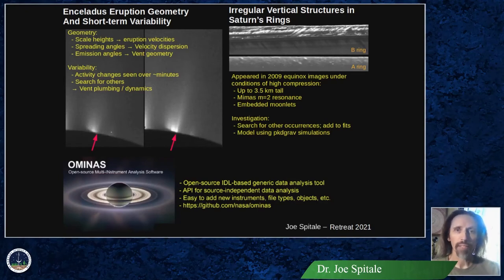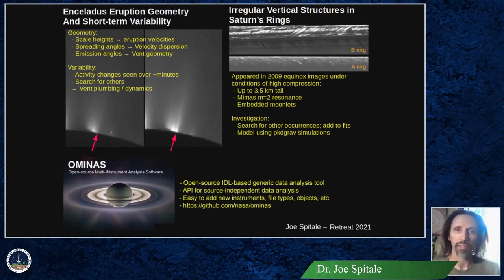During the course of our mapping of these fractures, we had to account for various geometric issues, and we also encountered some short-term variability. These things can tell us about eruption velocities, velocity dispersions, vent geometry, and dynamics, so we're surveying the data sets to find every instance we can of those things.